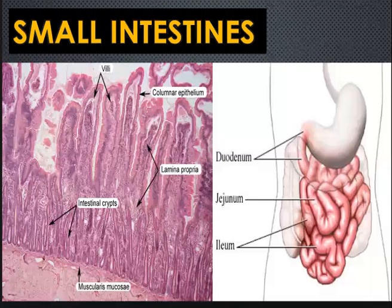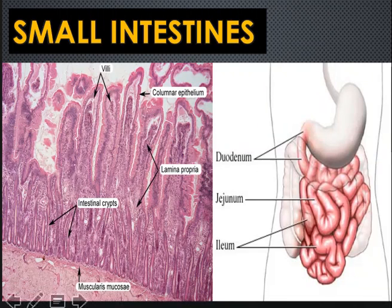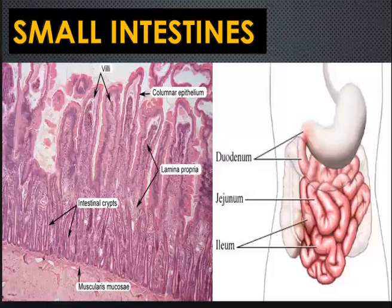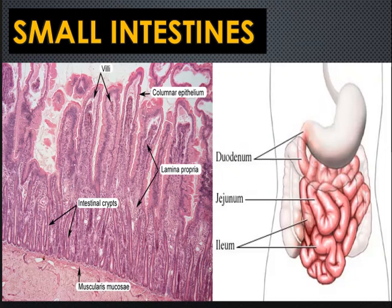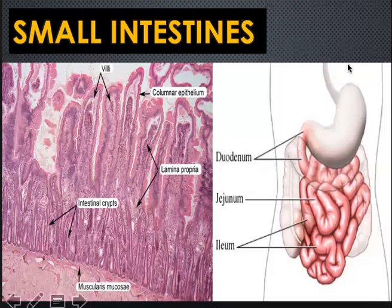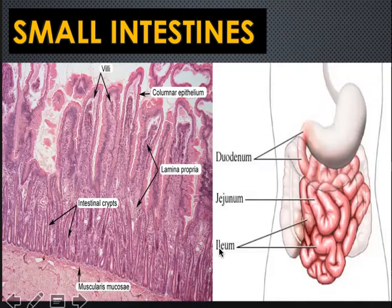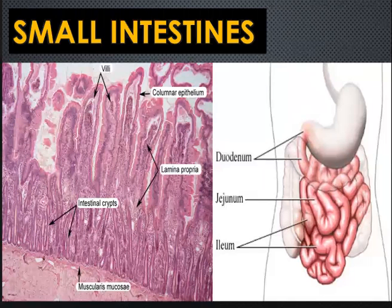Now let's start with the small intestine. It is the site where digestive processes are completed and where nutrients — the products of digestion — are absorbed by the small intestinal cells at the epithelial lining. The small intestine is approximately five meters long and consists of three segments: the duodenum, the jejunum, and the ileum.